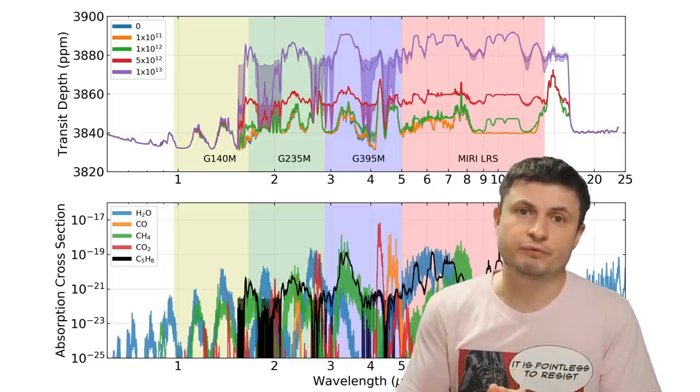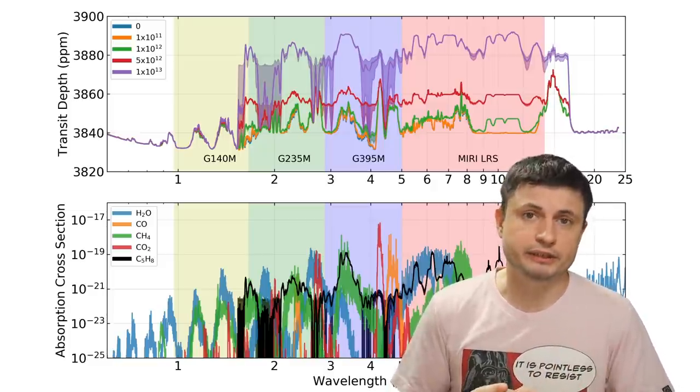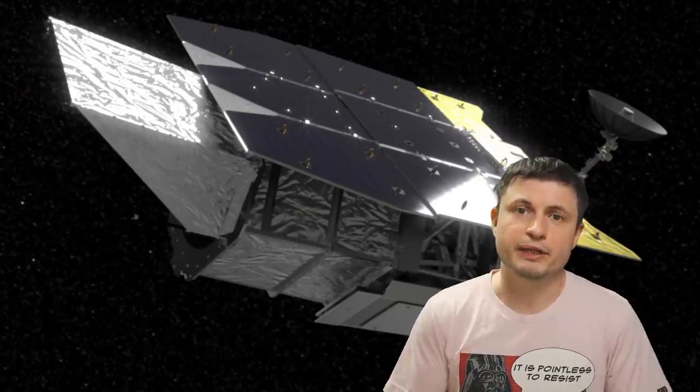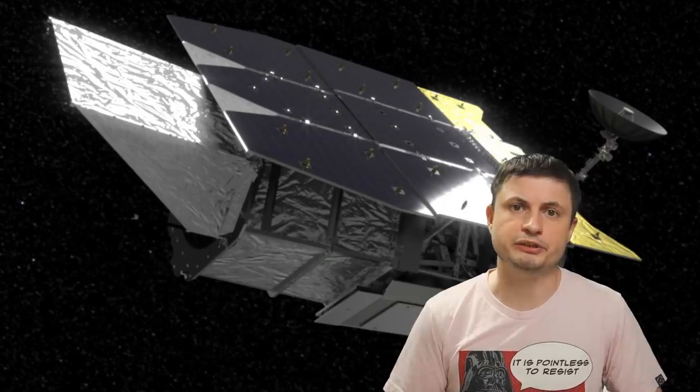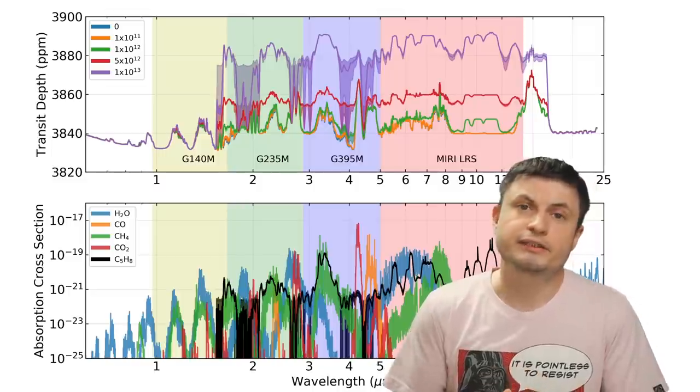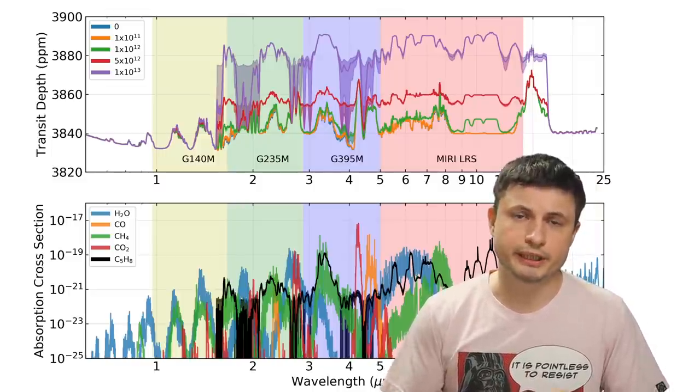And so determining if what we're looking at is isoprene is still a bit of a challenge. But once again, future telescopes, especially the Nancy Grace Roman telescope that's going to become operational in 2025, are going to have enough power to allow us to definitively say what it is that we're looking at.